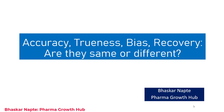We evaluate accuracy during method validation, maybe for assay or impurities. We also sometimes call accuracy as trueness, bias, or recovery. The question here is: are these terms really the same, or are they different from each other? I am sure you may have the same curiosity, and this could be a potential question during your next interview if method validation is part of your job description.